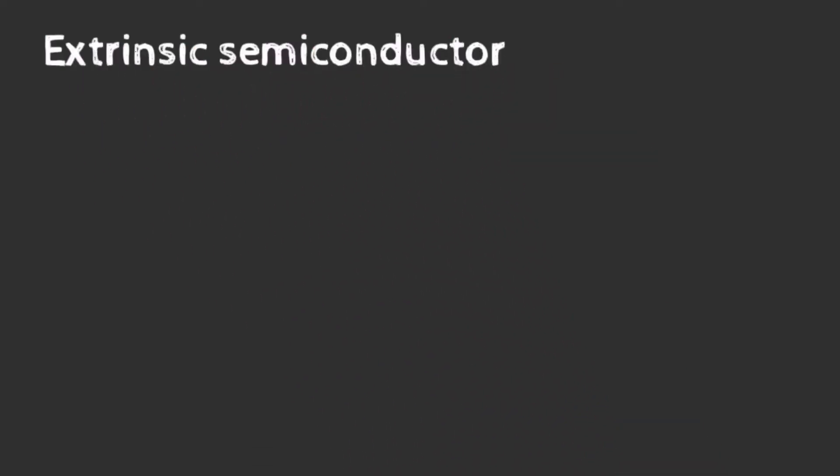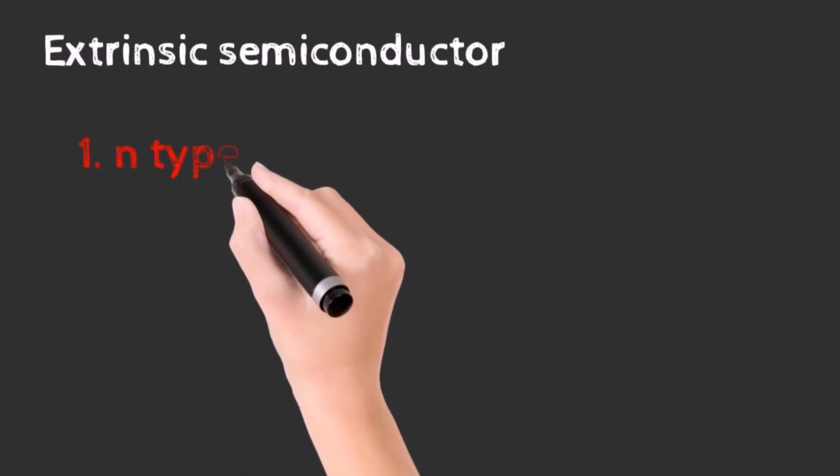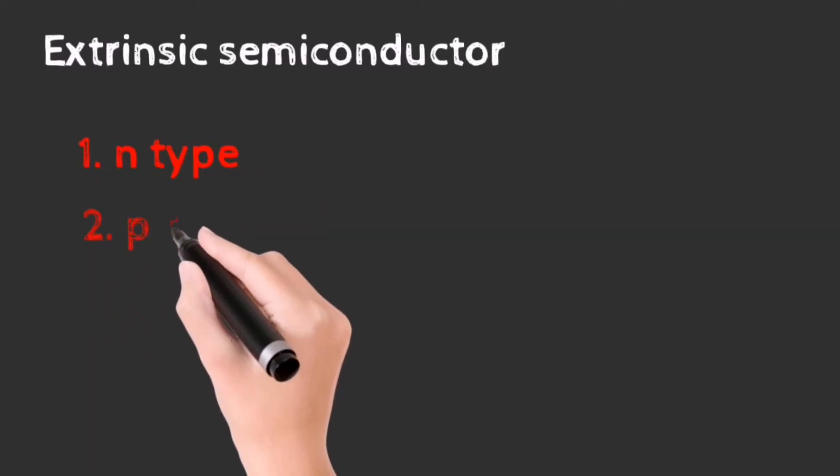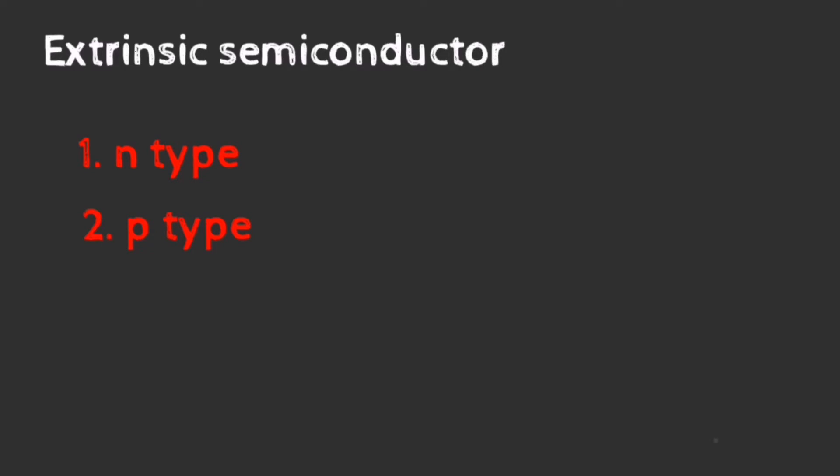Let's now discuss about extrinsic semiconductors. These are basically the impure form of semiconductors formed by adding either pentavalent or trivalent impurity to a pure semiconductor atom. Extrinsic semiconductors are basically of two types: N-type extrinsic semiconductor and P-type extrinsic semiconductor.